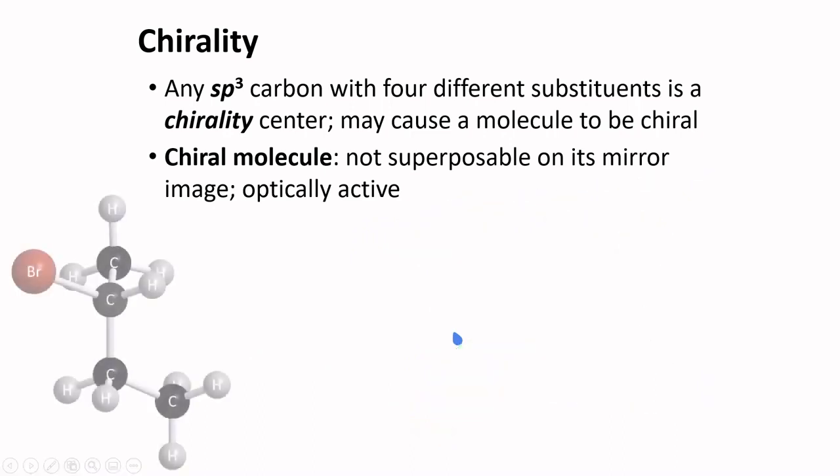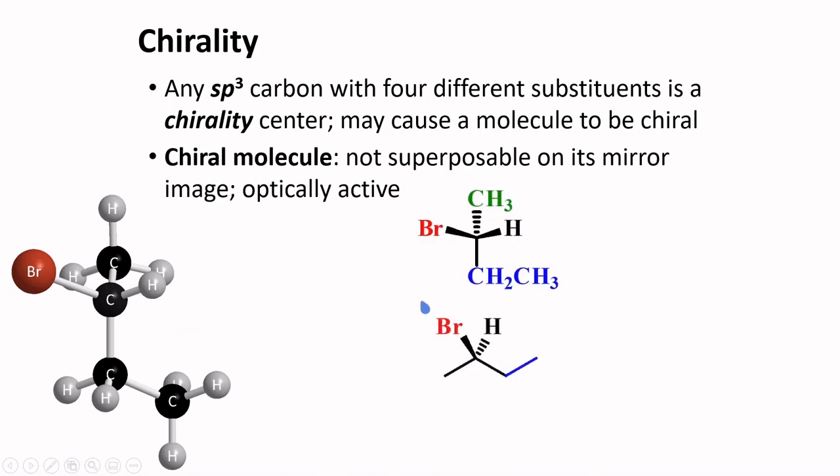An example of a chiral molecule is 2-bromobutane. 2-bromobutane can be represented by this drawing wherein the bromine is positioned on this side, and this structure can be equivalent to this line form. The central carbon has four different substituents: a bromine, a methyl, a hydrogen, and an ethyl group. Because of these groups, the molecule has a non-superposable mirror image, and thus, these two molecules are considered chiral.